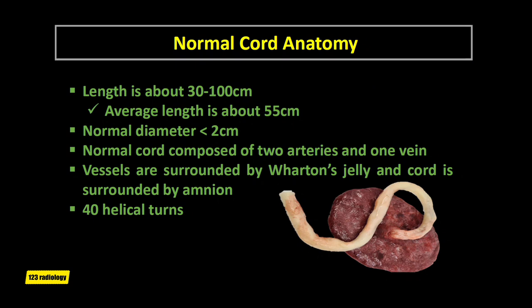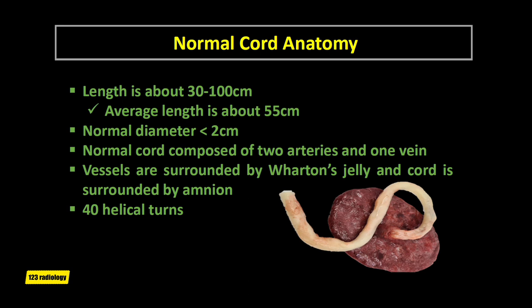The umbilical cord plays an important role in fetal health and development. The normal length ranges from 30 cm to 100 cm, with an average of about 55 cm. The normal diameter is less than 2 cm. The cord contains two arteries and one vein, surrounded by Wharton's jelly and covered by a single layer of amnion. The arteries follow a helical course around the umbilical vein, resulting in up to 40 helical turns. Coiling is thought to protect the cord by adding strength and resisting compression.